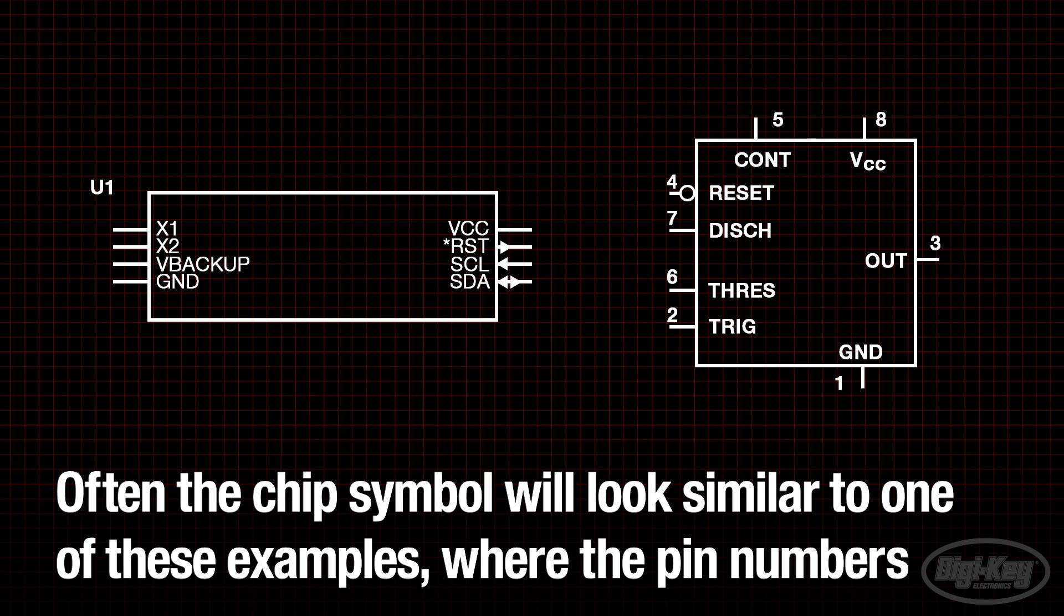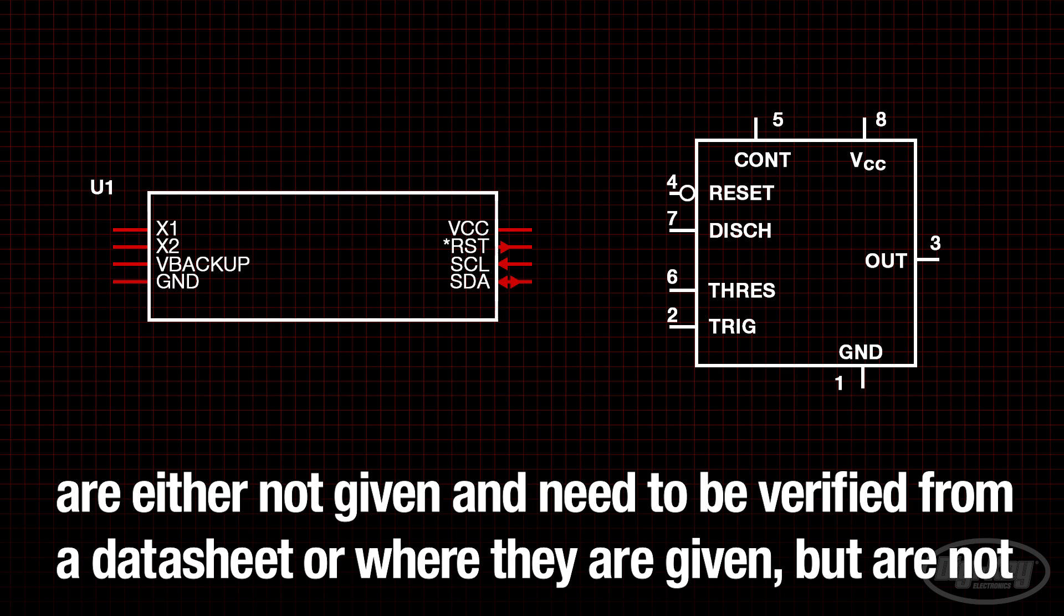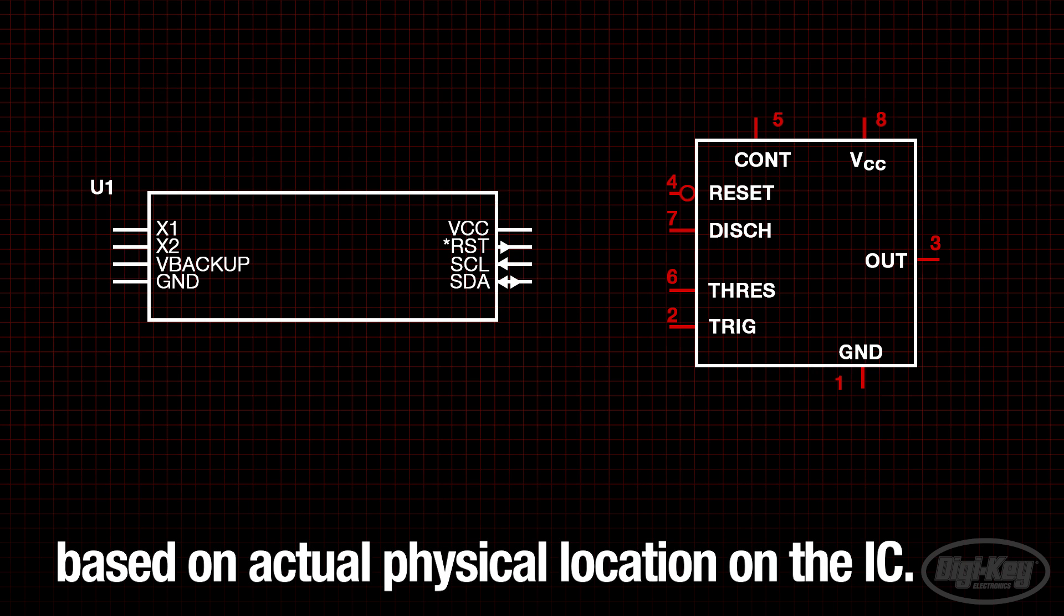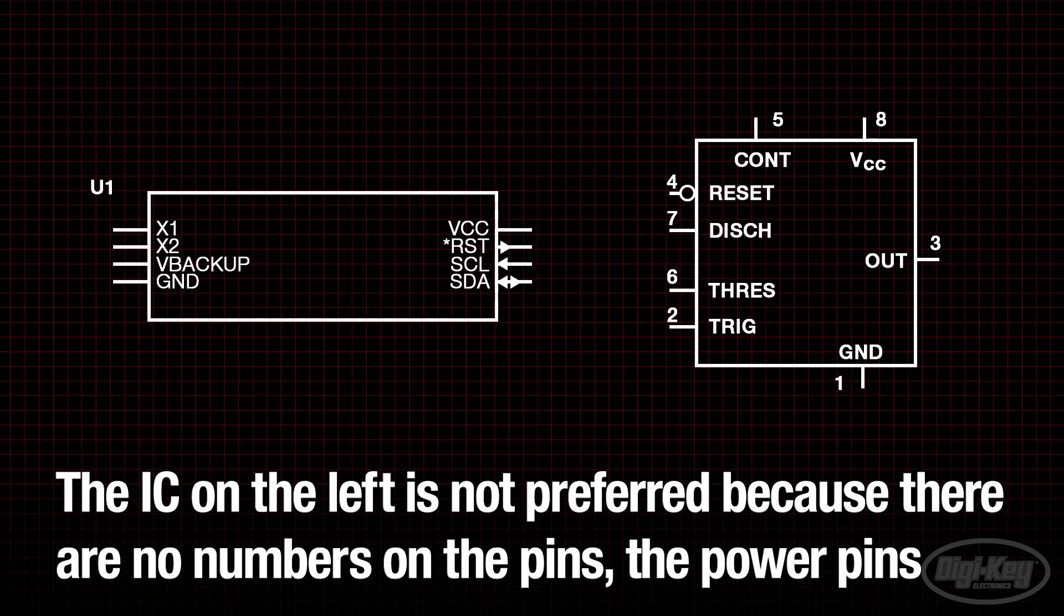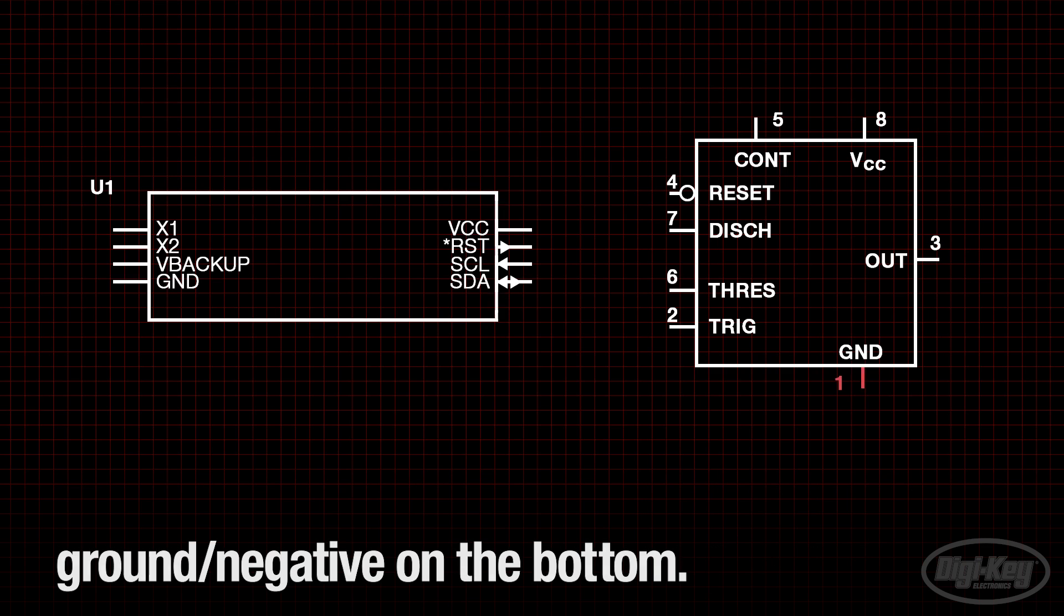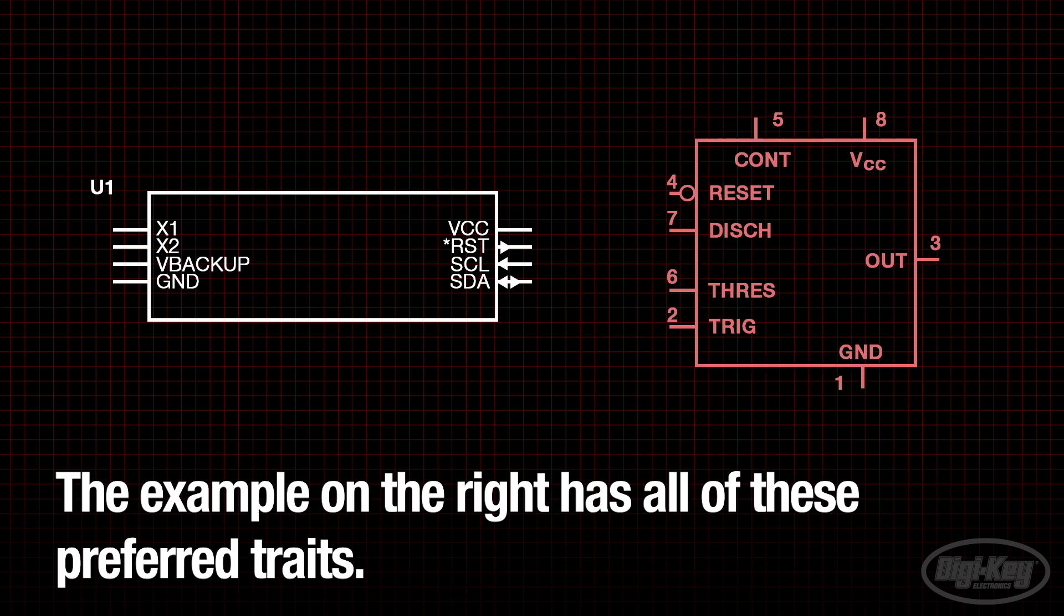Often, the chip symbol will look similar to one of these examples where the pin numbers are either not given and need to be verified from a datasheet, or where they are given but are not based on actual physical location on the IC. The IC on the left is not preferred because there are no numbers on the pins. The power pins should be located on the top, the input and other pins on the left, outputs on the right, and ground or negative on the bottom. The example on the right has all of these preferred traits.